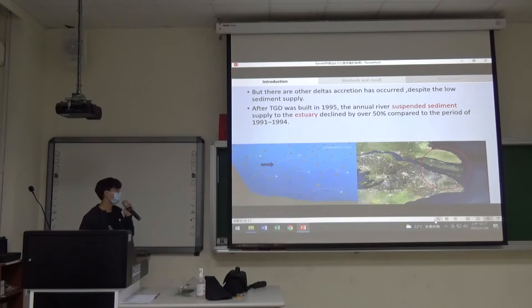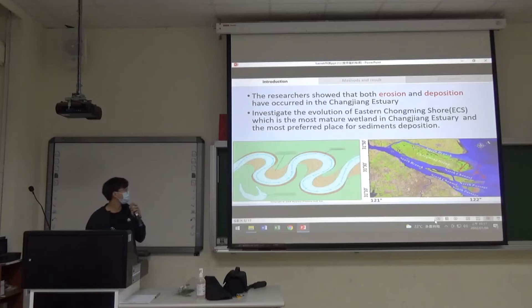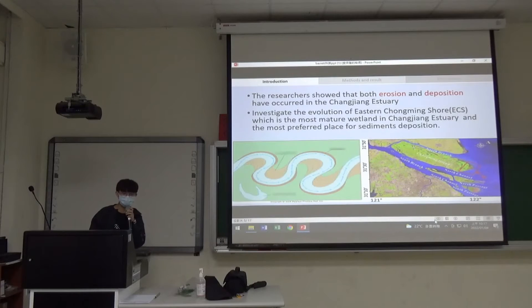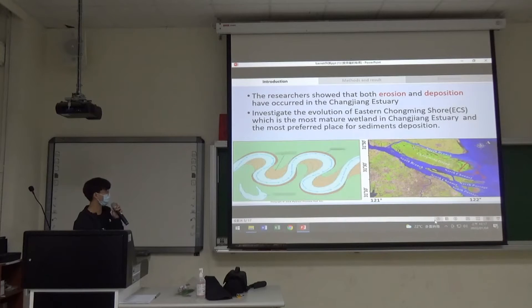After TGD was built in 1995, the annual river suspended sediment supply to the estuary declined by over 50%. This is a picture of suspended sediment. Although TGD was built in 1995, research showed that both erosion and deposition have occurred in Changjiang Estuary. Here is erosion and deposition.